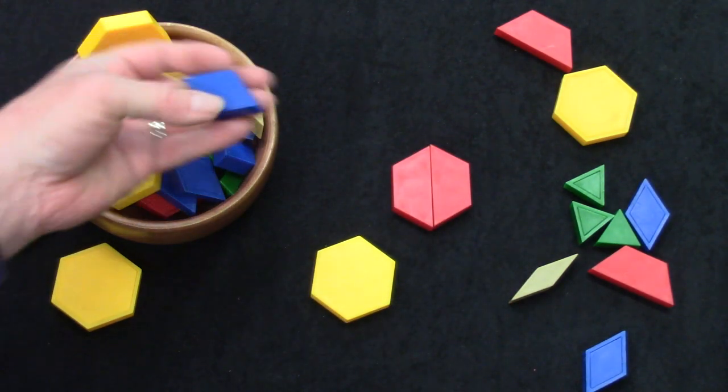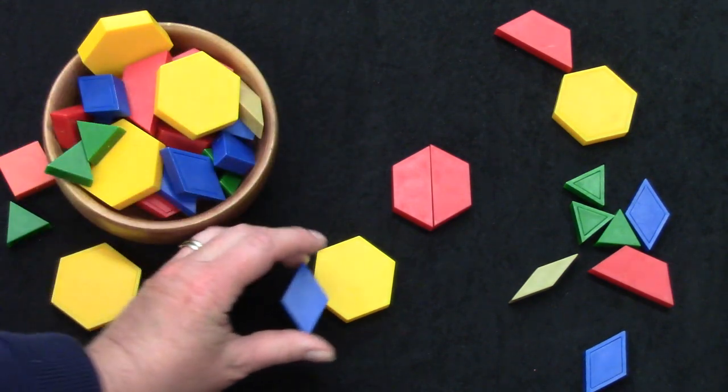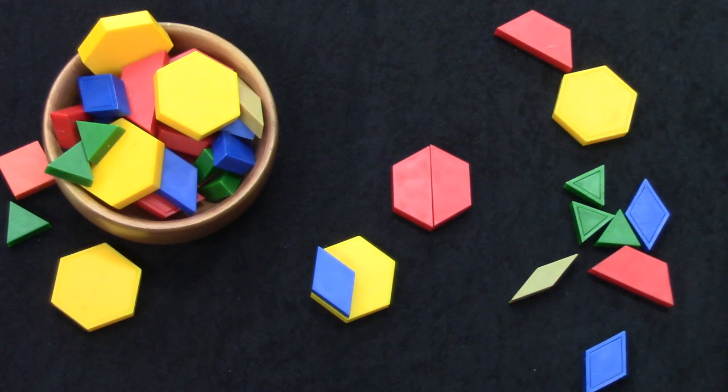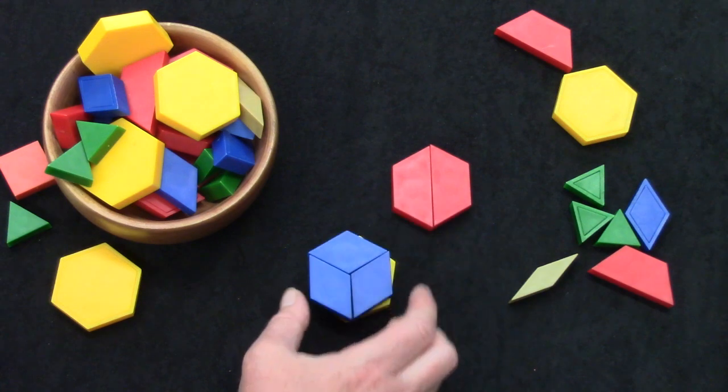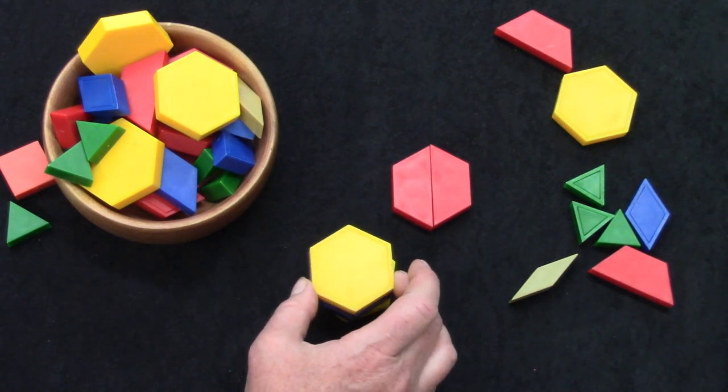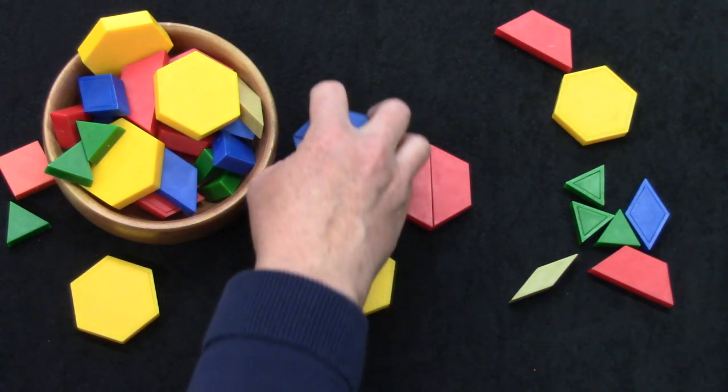What about the rhombus or the parallelogram? Can you guess? How many will I need to cover the hexagon? You can try it too. Did you guess three? It takes three parallelograms to equal the hexagon.